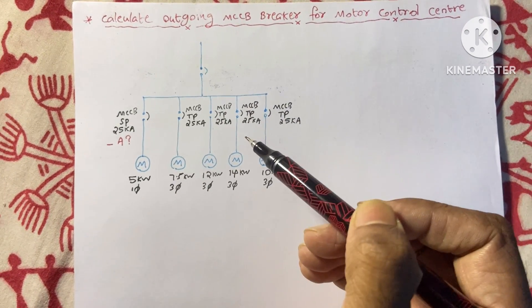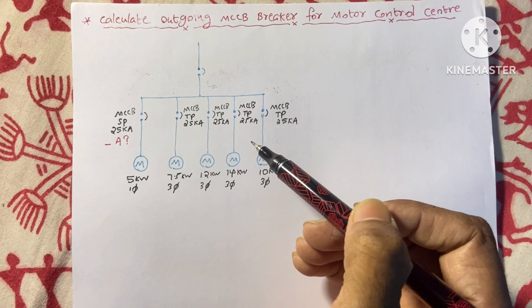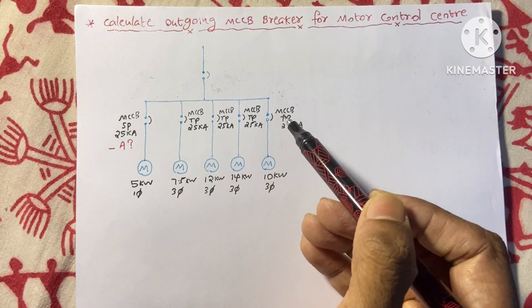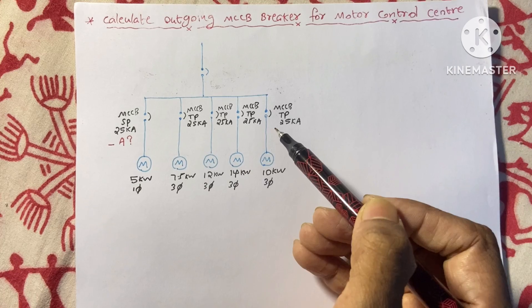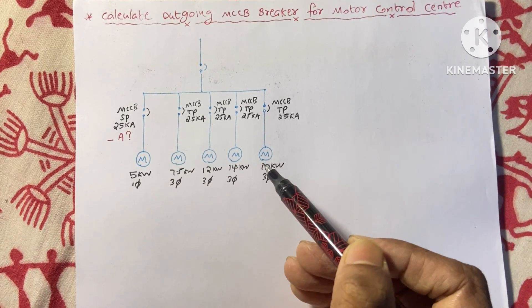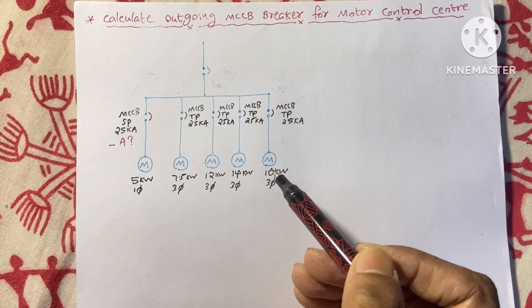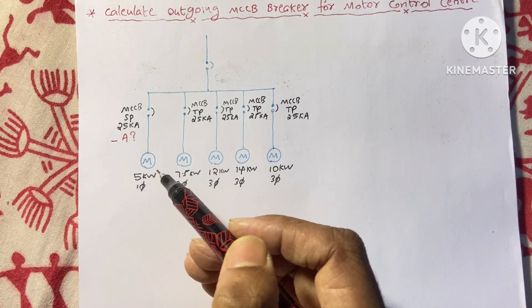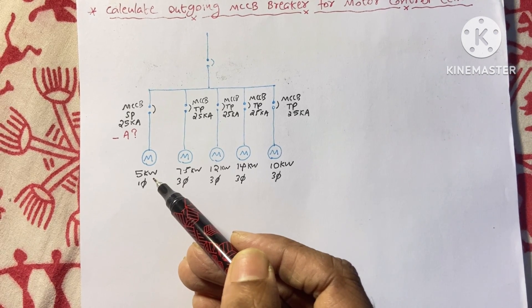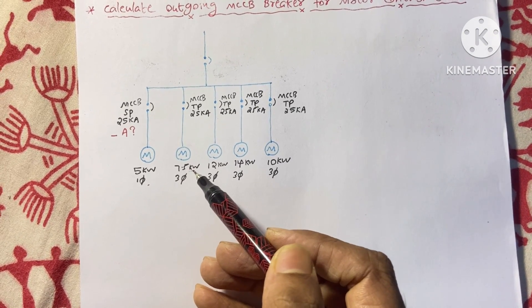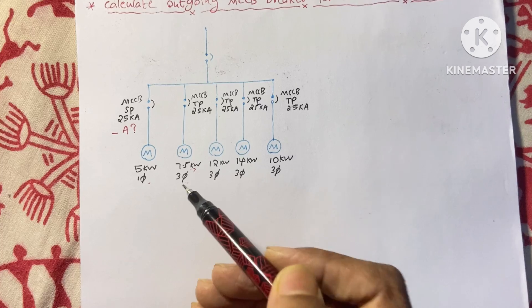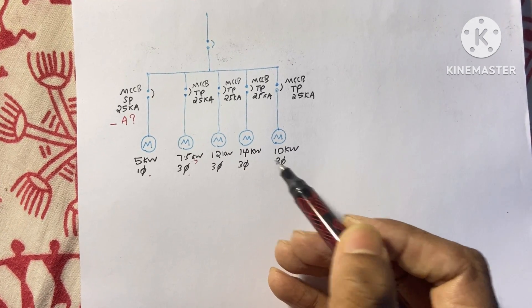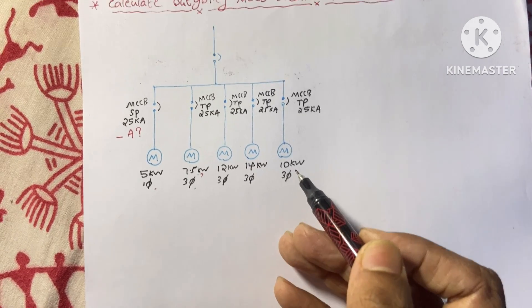Here we have the setup of the motor control center and here we have different outgoings. There are different MCCBs you can see here and we have different motors. These motors could be any pump or any fan. I generally put it as motors and we have here a 5 kilowatt single phase motor and here is 7.5 kilowatt three phase motors and all others are different kinds of motors: three phase 12 kilowatt, 14 kilowatt, and 10 kilowatt motors.